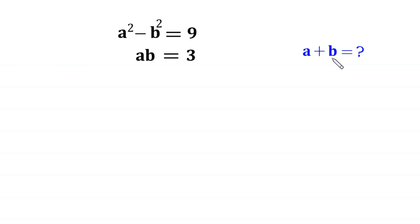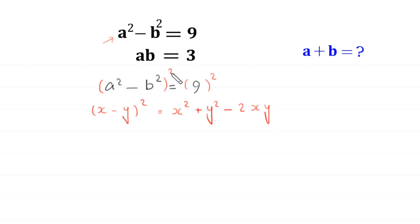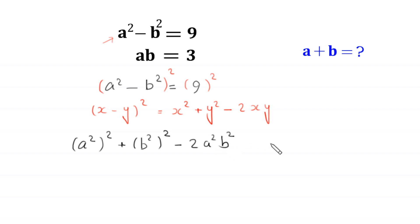Let's start by squaring both sides of the equation a squared minus b squared equals 9. By using the algebraic identity (x minus y) whole squared equals x squared plus y squared minus 2xy, the expression (a squared minus b squared) whole squared will become a squared whole squared plus b squared whole squared minus 2 times a squared b squared, equal to 9 squared which is 81.